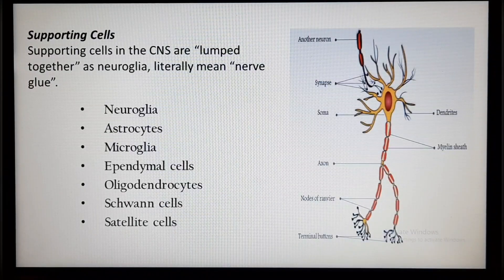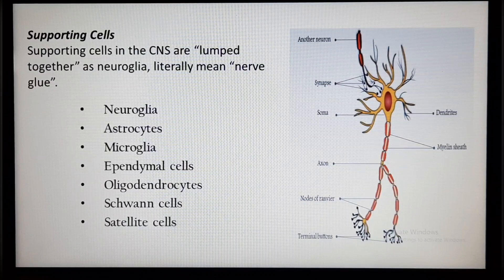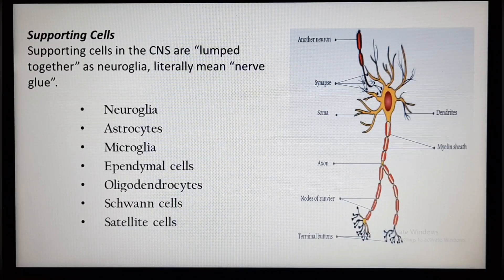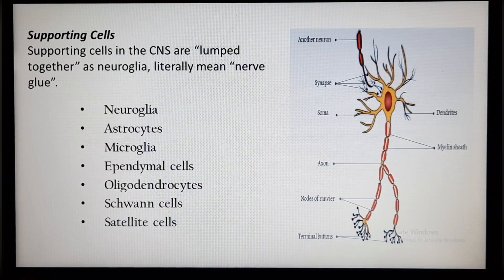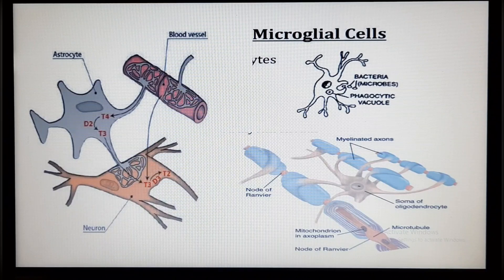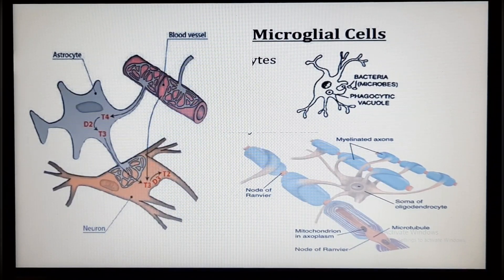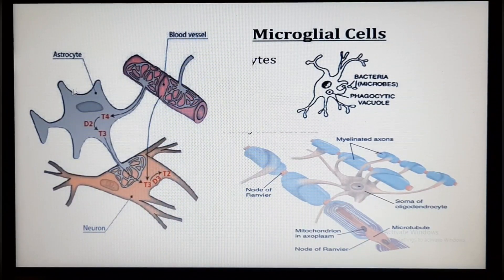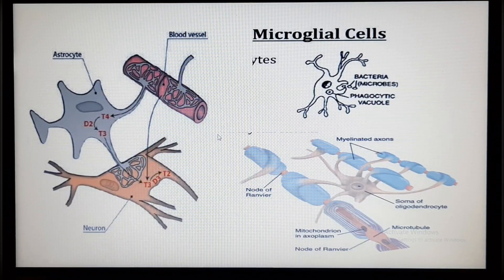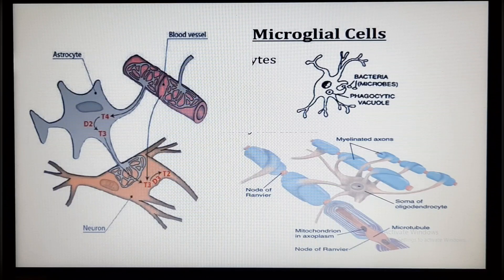The supporting cells in the central nervous system are called neuroglia, literally meaning nerve glue. Neuroglia include many types of cells that generally support, insulate and protect the delicate neurons. Types of neuroglia include astrocytes, microglia, ependymal cells, oligodendrocytes, Schwann cells, and satellite cells. Astrocytes are abundant star-shaped cells that account for nearly half of the neural tissue. They form a living barrier between the capillaries and neurons and help protect neurons from harmful substances that might be in the blood.